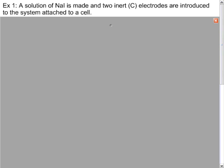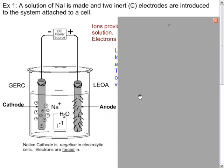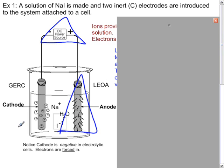So let's consider our first reaction. A solution of sodium iodide is made and two inert carbon electrodes are introduced to the system attached to a cell. An electrolytic cell looks a little bit different from an electrochemical cell. It all takes place in one beaker. We don't have to worry about spontaneous reactions occurring, if we set it up right. It needs to be connected to a DC power source. We are, of course, forcing this particular reaction to occur. We still have our anode and we still have our cathode. And so all of that is going to still occur, but now it can occur in one beaker.